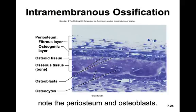In this histology slide, you can see the osteogenic layer where osteoblasts are putting out a layer of osteoid tissue. You can also see development of the periosteum with its two layers: the fibrous outer layer and the osteogenic inner layer containing osteoblast cells.